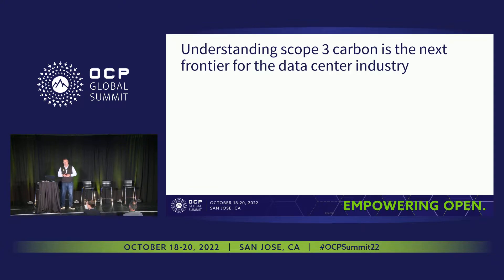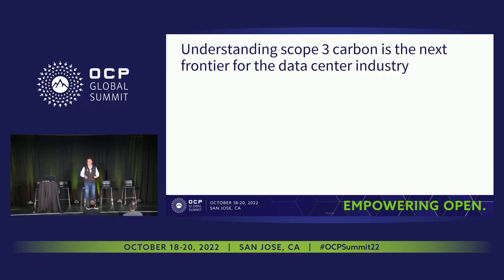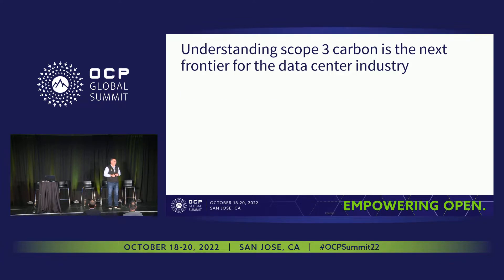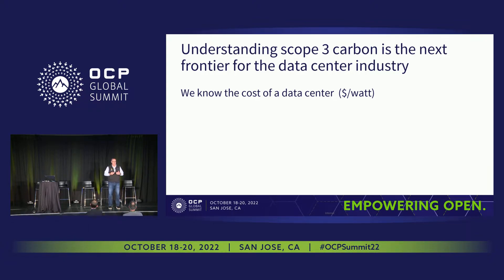I believe that understanding Scope 3 emissions is probably the biggest sustainability challenge that data centers have right now. And if you think about what we actually know about data centers — if I were to say I just built a data center for $6 a watt or $6,000 a megawatt, you'd probably say that's a pretty good price. A lot of us have a feel for what it costs to build a data center for the capacity of IT.